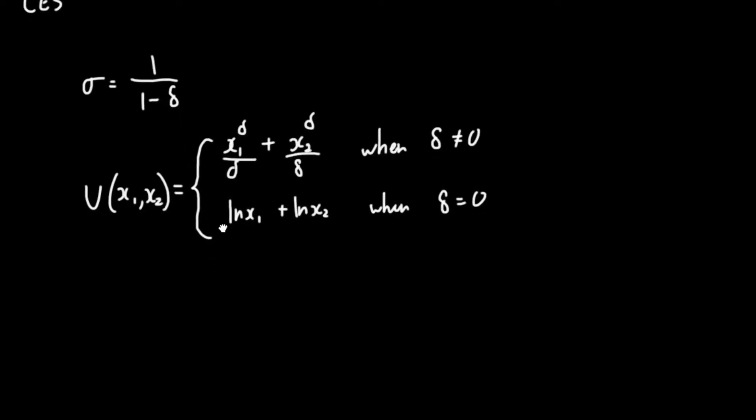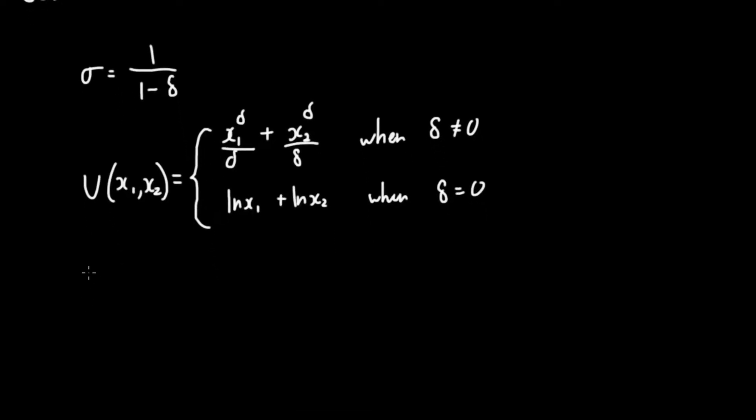In the case of perfect substitutes we can actually see that delta is equal to 1, because when delta equals 1 this just means that x₁ plus x₂ is raised by 1 and divided by 1, meaning this is actually a linear function. And when we have delta equal to 1, our elasticity would be equal to 1 over 0, which is equal to positive infinity.